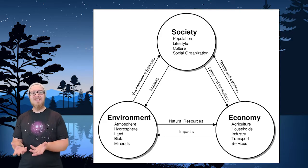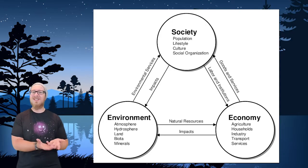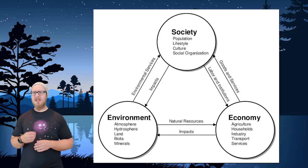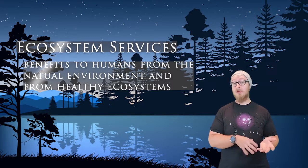We rely on the environment to support our society and our economy. In 1997, Robert Costanza, a very famous professor from Portland State University in Oregon, and his colleagues first estimated that ecosystem services worldwide are worth about $33 trillion. In today's money, accounting for inflation, that is $52 trillion worth of economic value we get out of ecosystems.